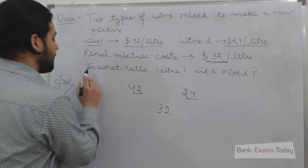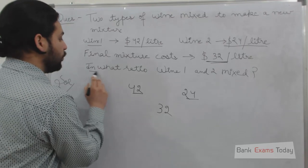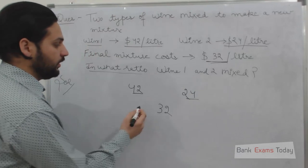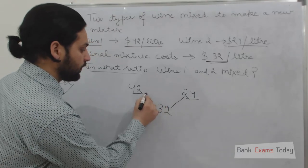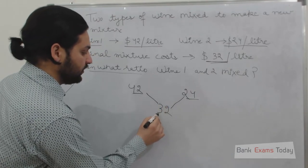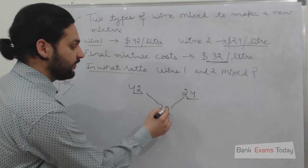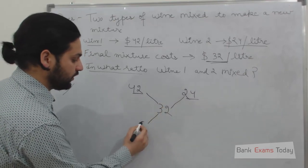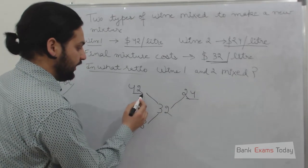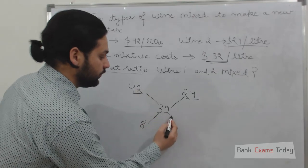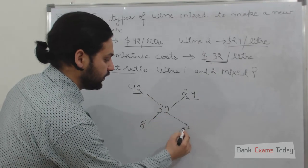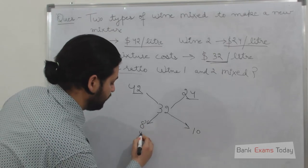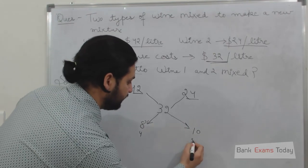Now what is asked is: in what ratio were wine 1 and wine 2 mixed? What we will do is simply deduct 24 from 32, which gives 8, and deduct 32 from 42, which gives 10. So what will be the ratio? It is 4 to 5, that is 8:10 simplified.